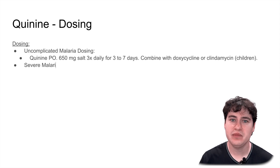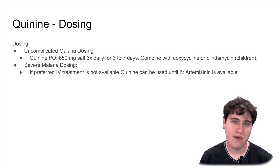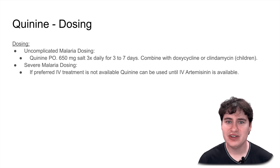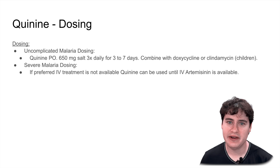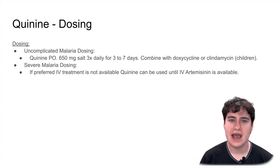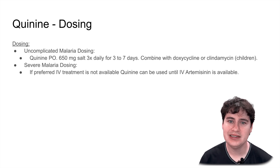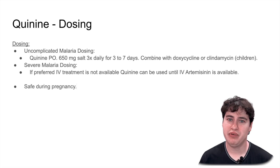For severe malaria — the fatal type — the recommendation is to start with IV artemisinin. If IV artemisinin is not available, an option is the same oral quinine dosing as for uncomplicated malaria. This isn't going to be the best option, but this is what the CDC currently recommends: you can use quinine until you can get IV artemisinin. Some other things important to note: quinine is safe during pregnancy, but keep in mind the hypoglycemia risk discussed in the side effects.